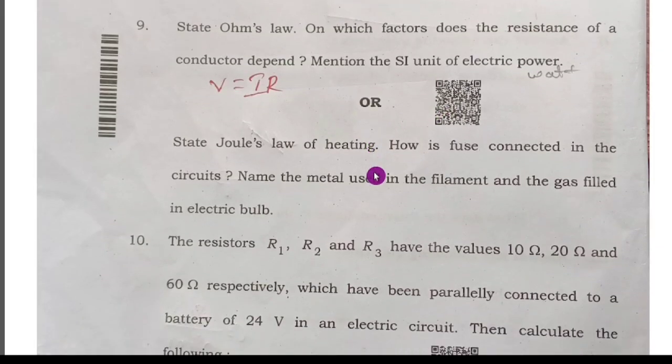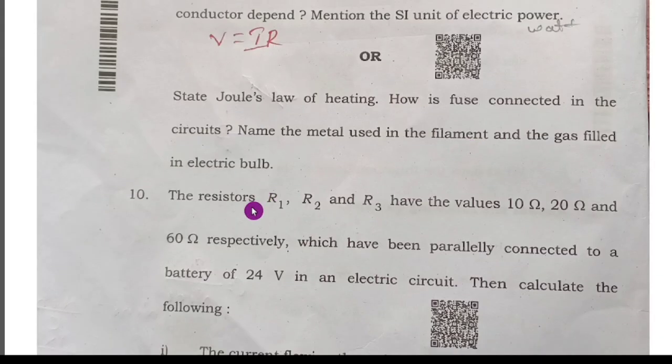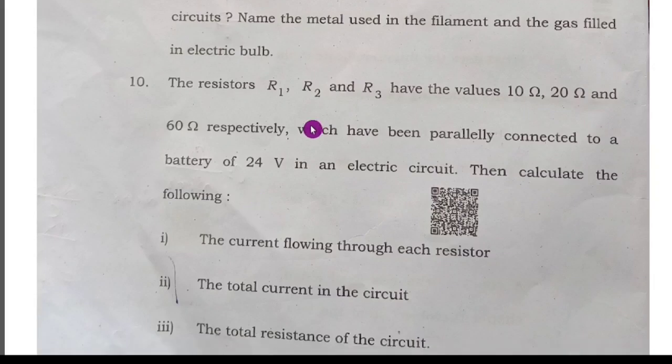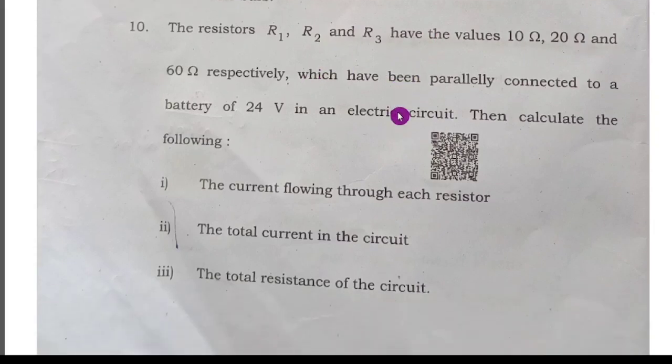Here option is there: Joule's law of heating, H equals I squared RT. The definition you have to write. Then name the metal used in the filament, that is tungsten metal.